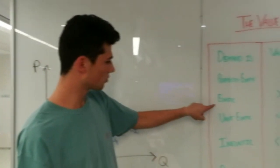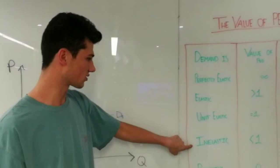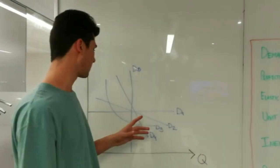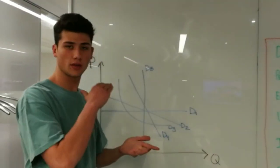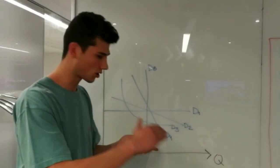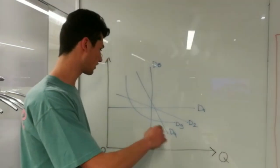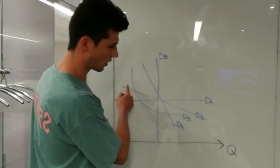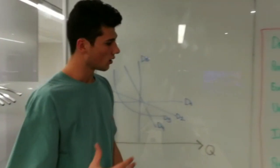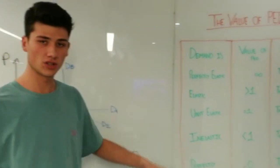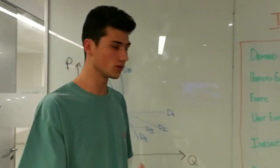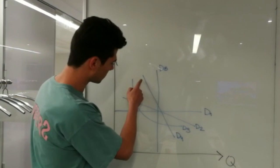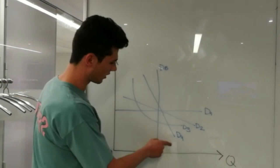I'm going to explain this with two basic examples. In elastic functions, they should in theory be closer to the horizontal axis, which can be represented in this way. On the other hand, in inelastic functions, they should be closer to the vertical axis, which can be represented with this graph.